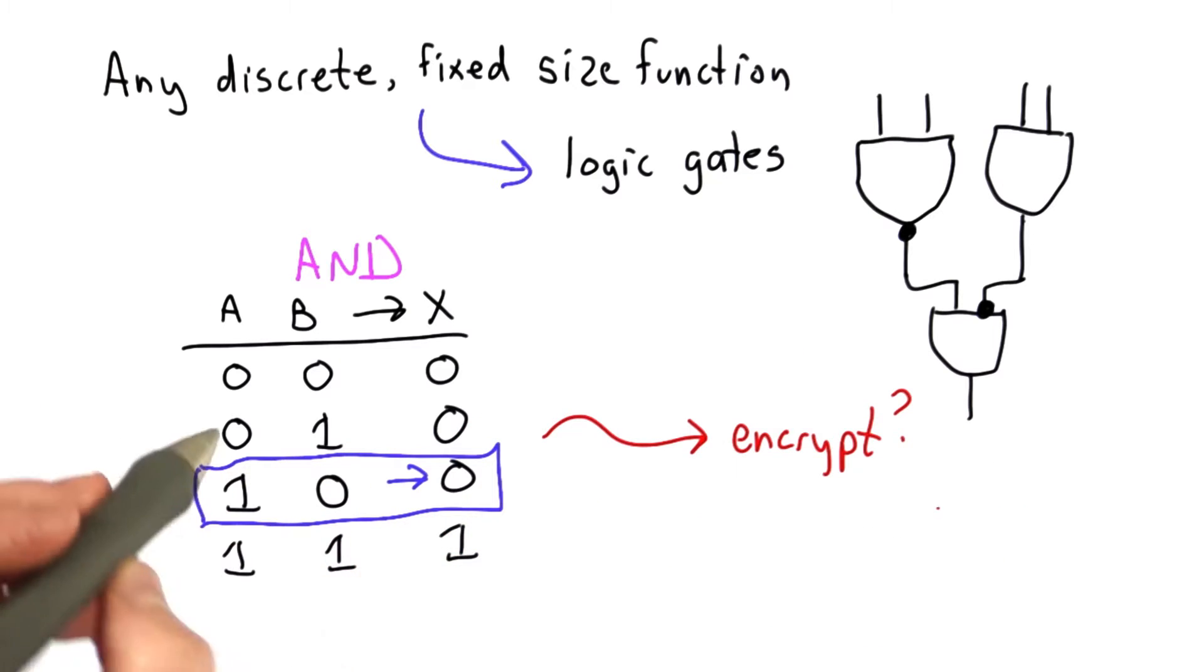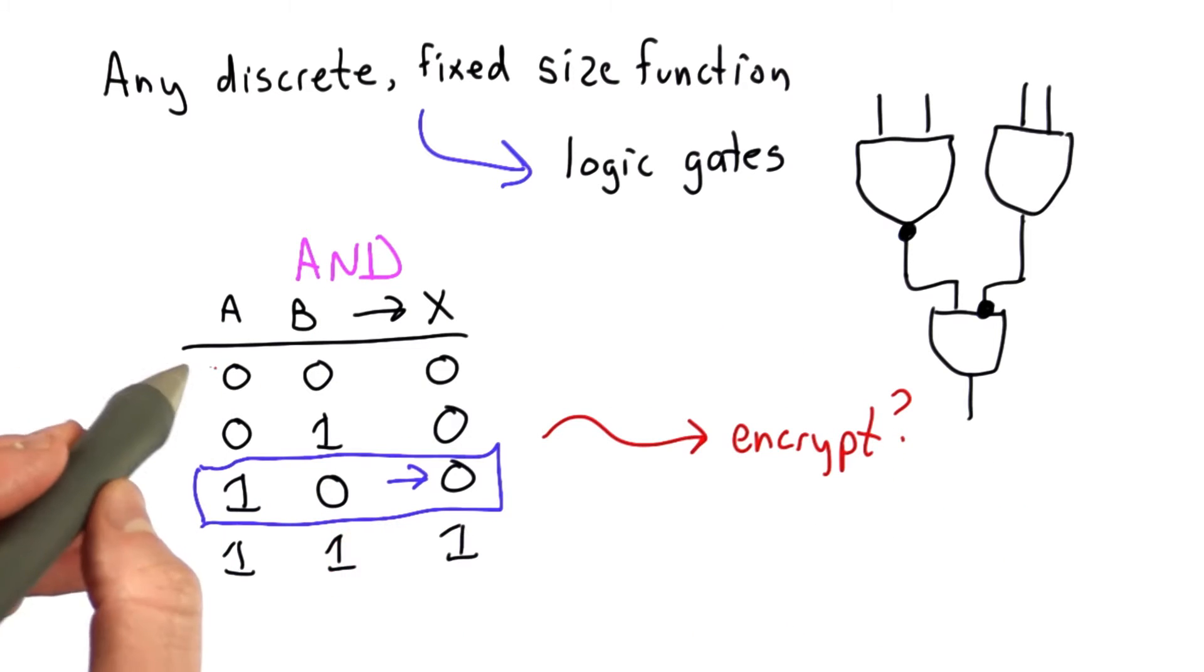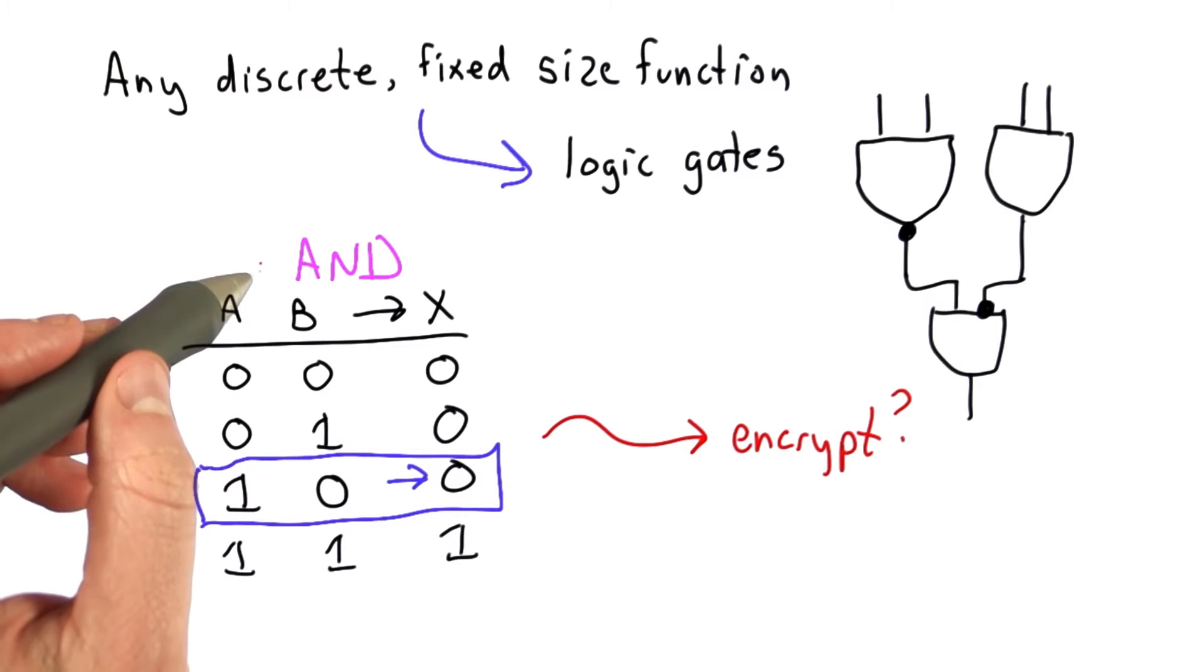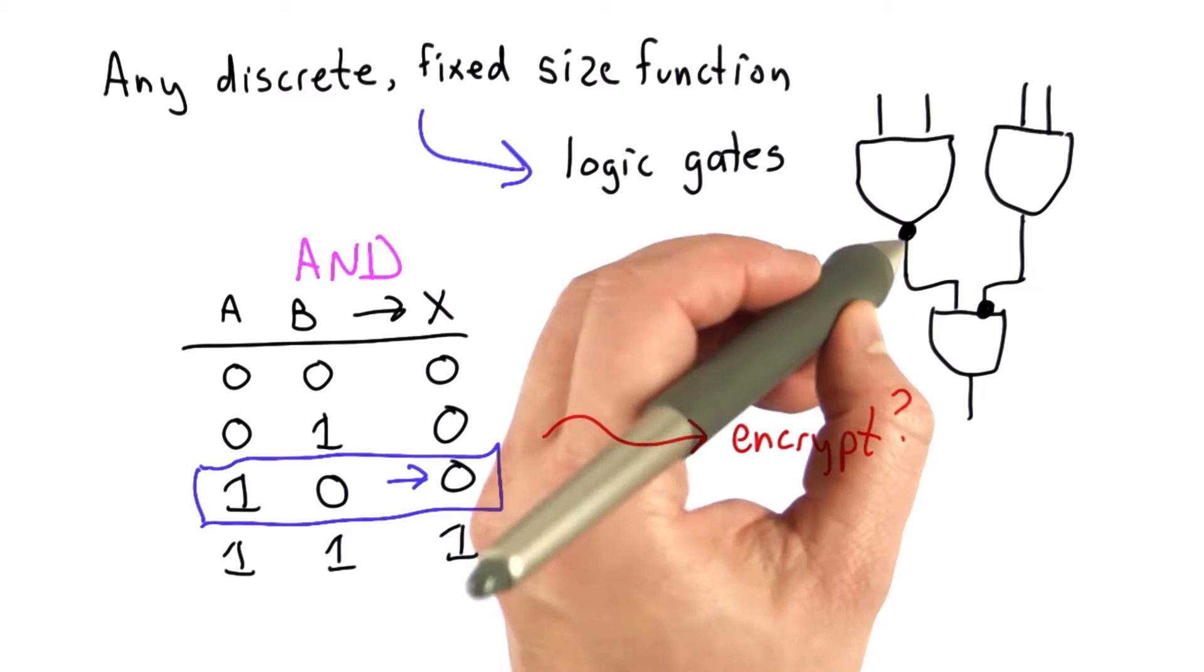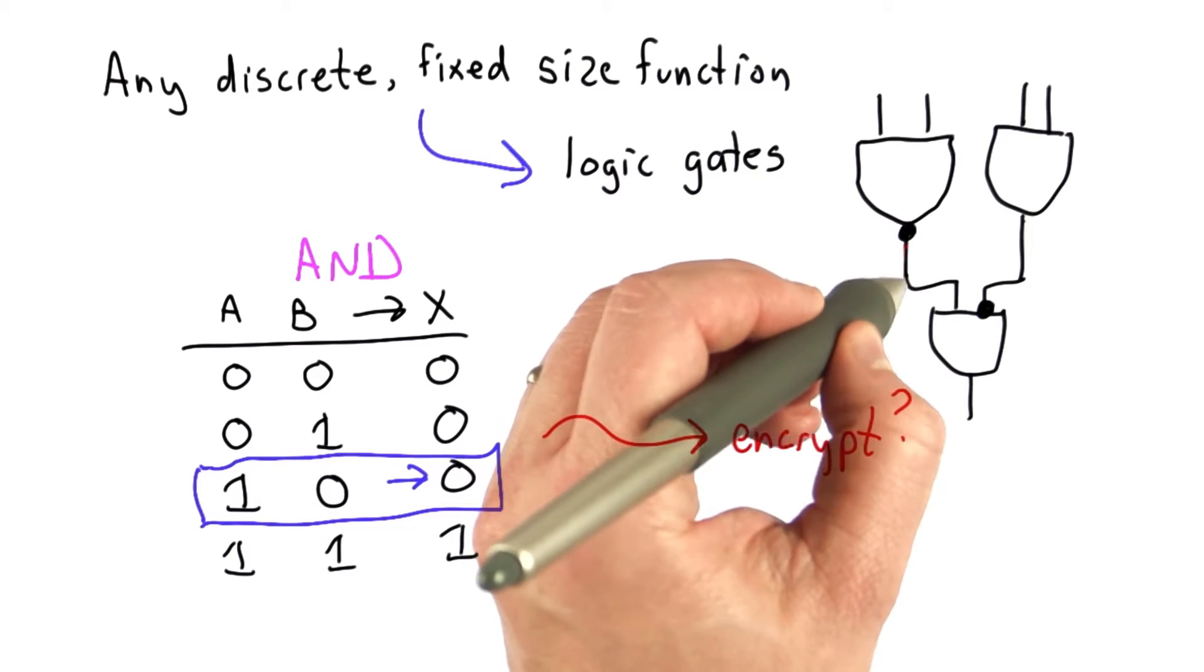Our goal is to encrypt this circuit in such a way that we can still evaluate it without actually knowing what the inputs are and without learning what the output is, but still produce an output that we can use as the input to the next circuit.